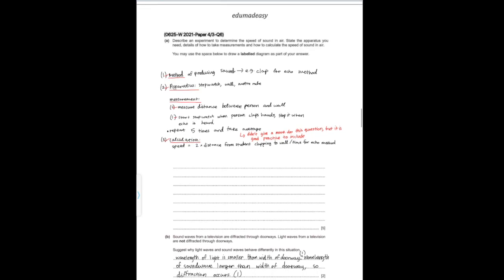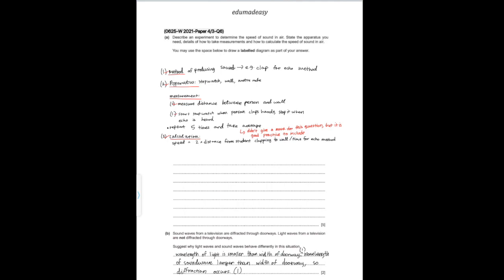The next question says: describe an experiment to determine the speed of sound in air — state the apparatus, details of how to take measurements, and how to calculate the speed. For any method questions worth 5 or more marks, make sure you include the method, apparatus, measurements, calculations, and I'd generally recommend also including that you'll repeat the experiment 5 times and take an average. For this particular question that doesn't earn a mark, but it's good practice because in many other questions it does.